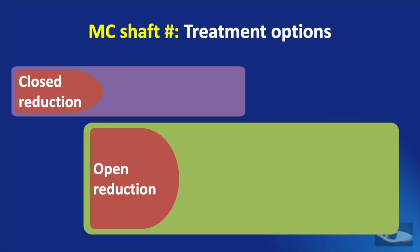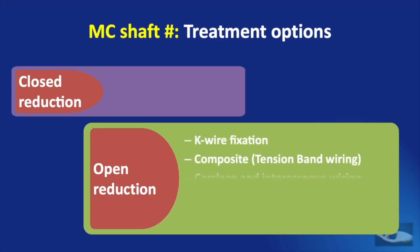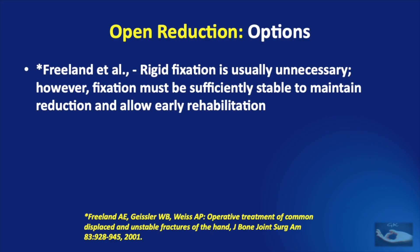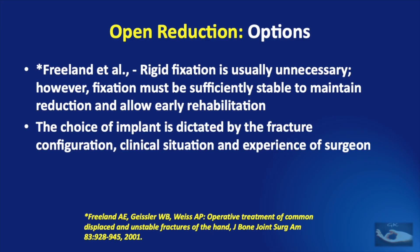There are different techniques available for fixation after open reduction: K-wire fixation, composite or tension band wiring, cerclage wiring and interosseous wiring, interfragmentary screw fixation, and plate and screw fixation. A study in 2001 stated that rigid fixation is usually unnecessary; however, fixation must be sufficiently stable to maintain reduction and allow early rehabilitation. The choice of implant is dictated by the fracture configuration, clinical situation, and the experience of the surgeon.